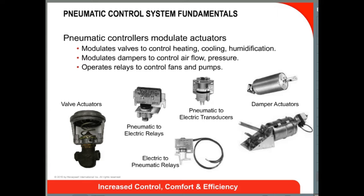The output of a pneumatic controller, the branch line, can operate various types of pneumatic actuators to accommodate the control of HVAC equipment. In a later video, we will examine the construction and operation of pneumatic valve and damper actuators. For now, we will simply state that the output BLP, the branch line pressure of thermostats, will be used to control all types of HVAC equipment. And now we will get back to how thermostats work.